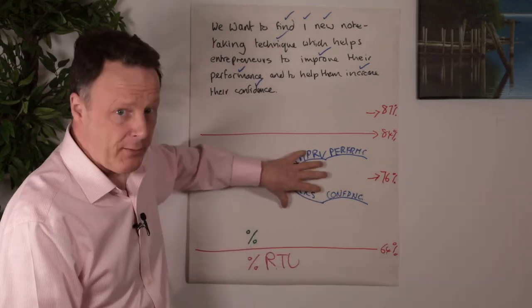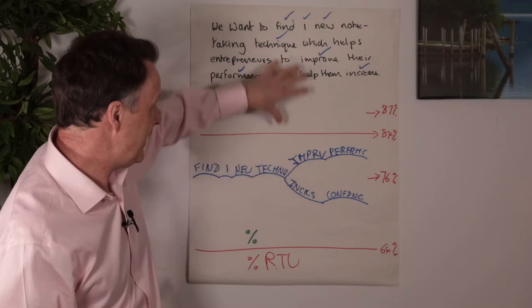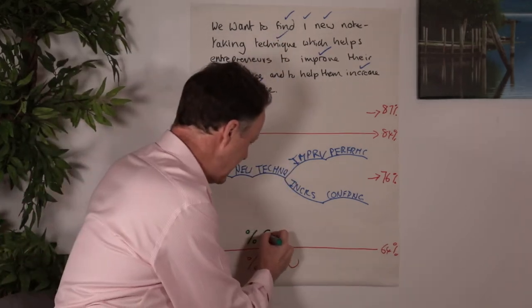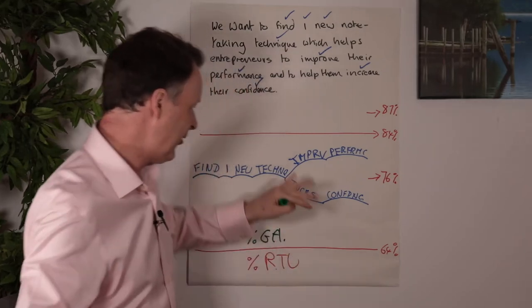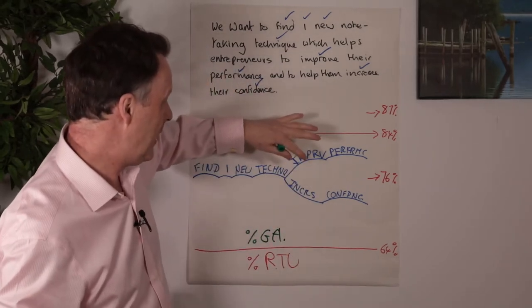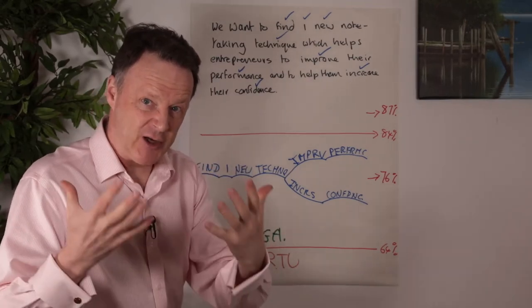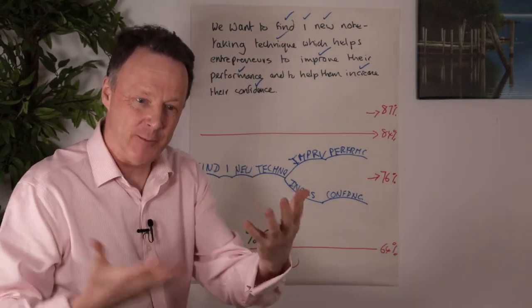Now, what then happens is I find this much easier to read than that. So then that enables me to increase this next percentage, which is glance access. So I can actually look at that in a way I can't look at that, which enables me to then access all the knowledge real time to be able to interact with people much better.